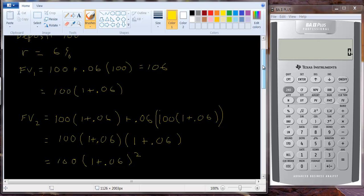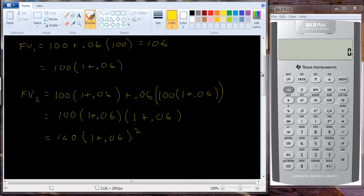We get one hundred times one plus point oh six squared. So it looks like there's going to be a pattern. And in fact there is. And there's no reason for me to derive each year. But it turns out that the future value in year three is going to be equal to one hundred times one plus point oh six cubed.